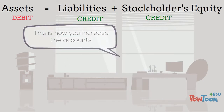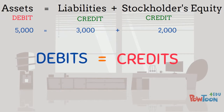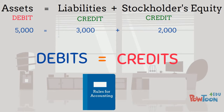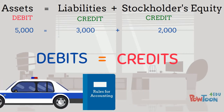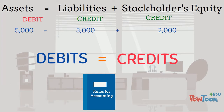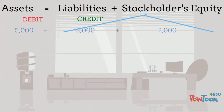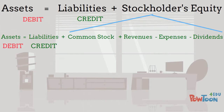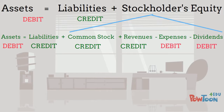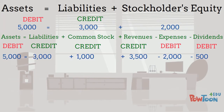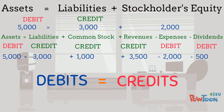Since we always have to keep our accounting equation in balance, we also must have total debits equal to total credits. This is one of the most basic rules of accounting and we never break this rule. But we don't increase and decrease stockholders' equity directly. Instead, we use the accounts found in the expanded equation. Since common stock and revenues increase stockholders' equity, they are increased with credits. And since expenses and dividends decrease stockholders' equity, they are increased with debits. We still want to keep our accounting equation in balance with total debits equaling total credits.